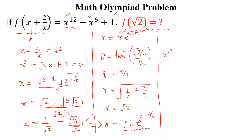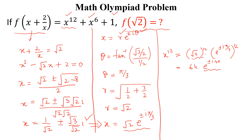x^12 = (√2)^12 · (e^(±iπ/3))^12. Simplifying, (√2)^12 = 64 and e^(±i·4π) = 1. So x^12 = 64.